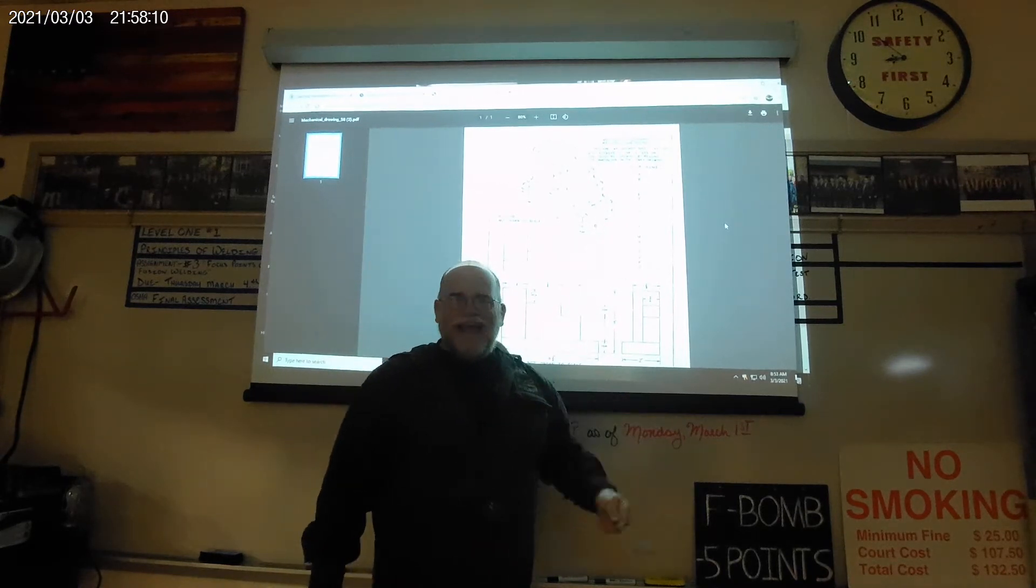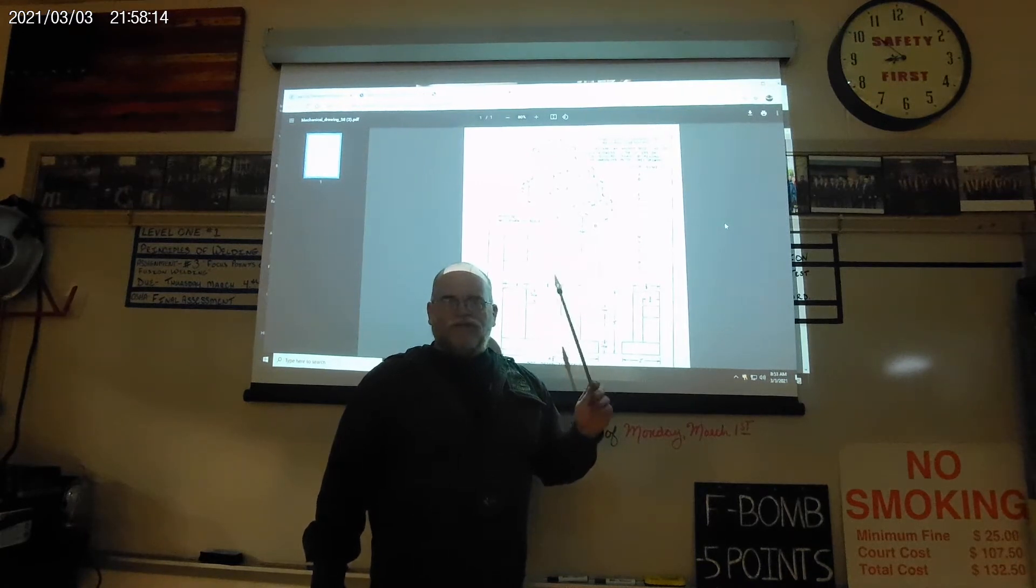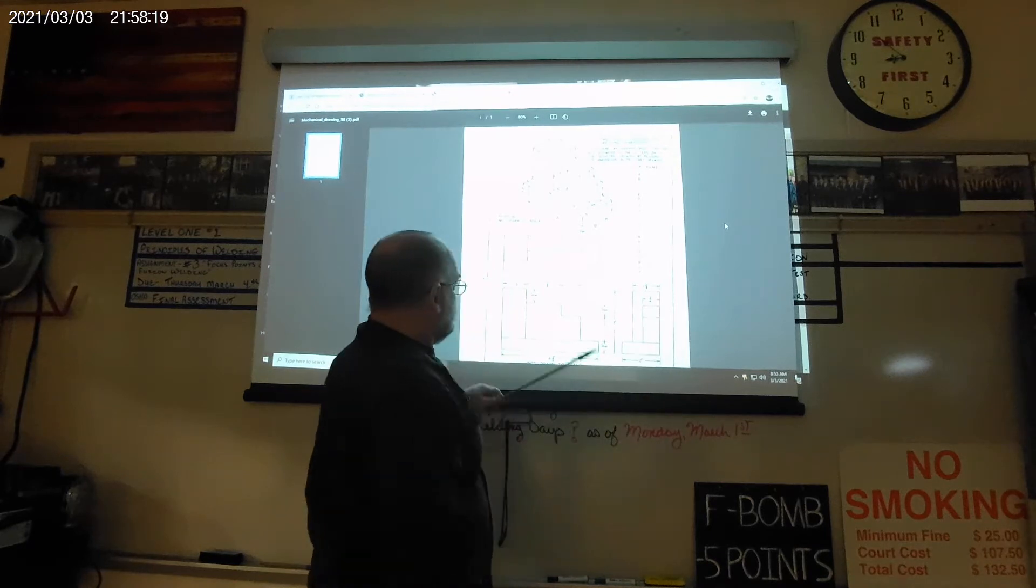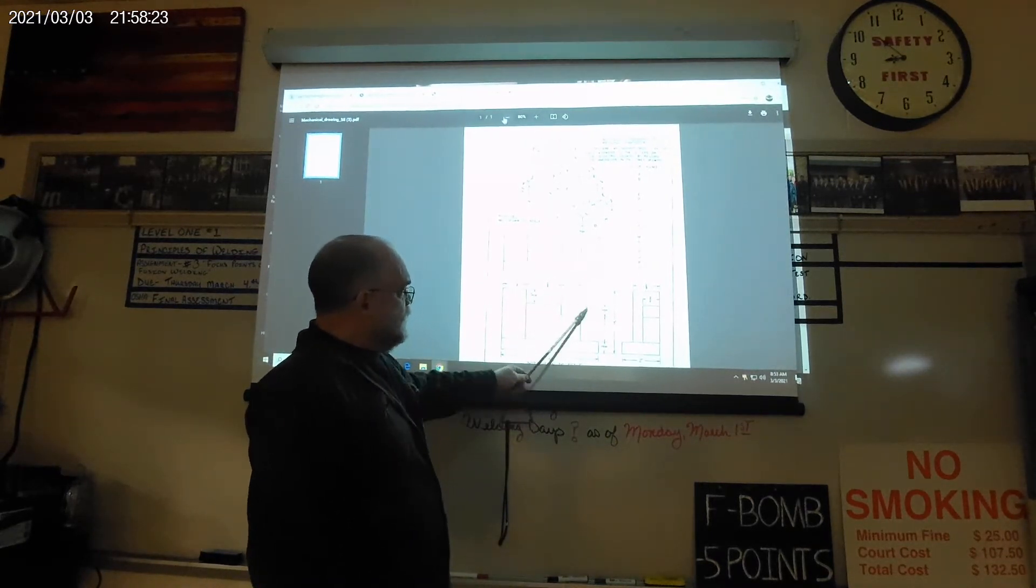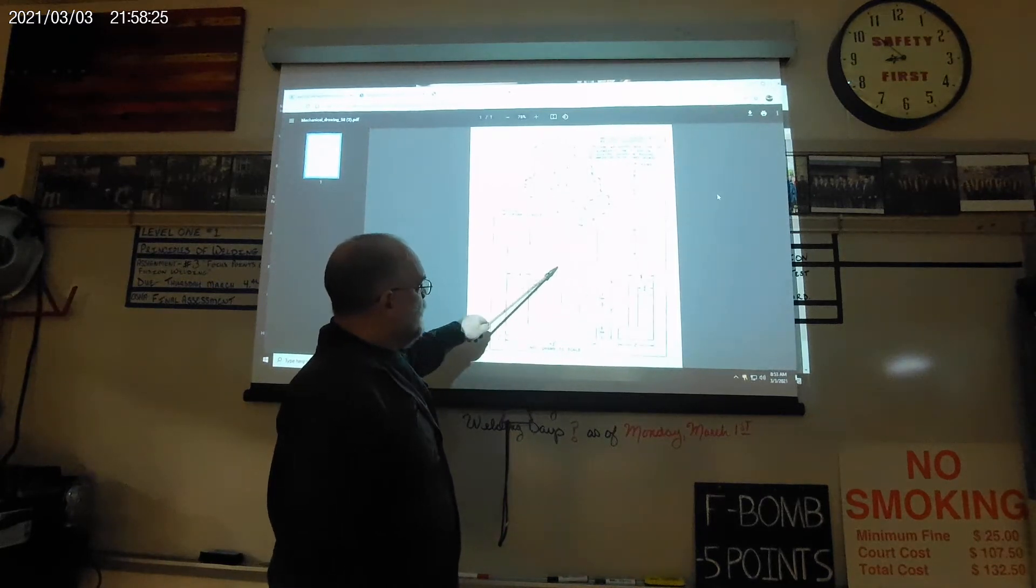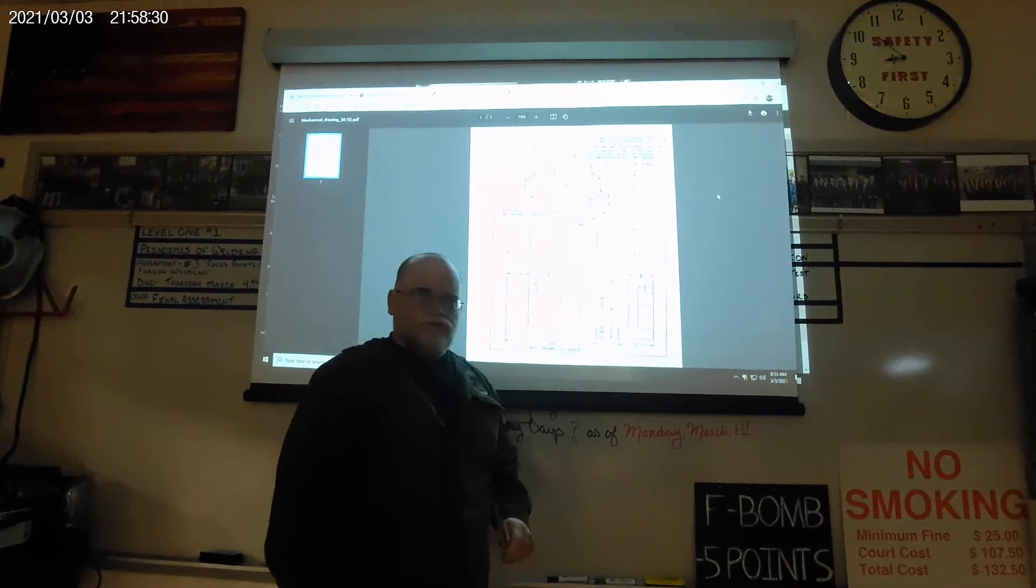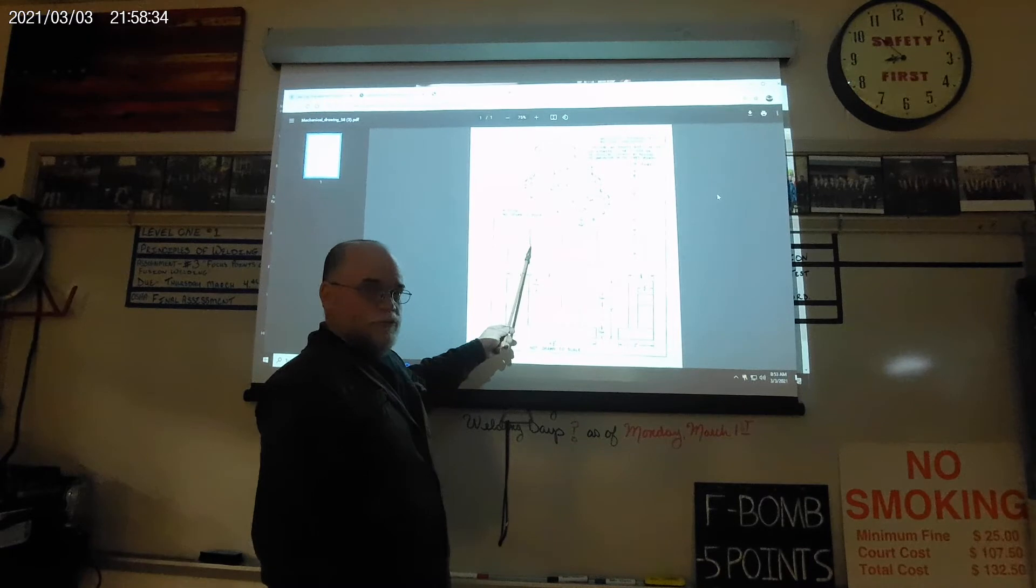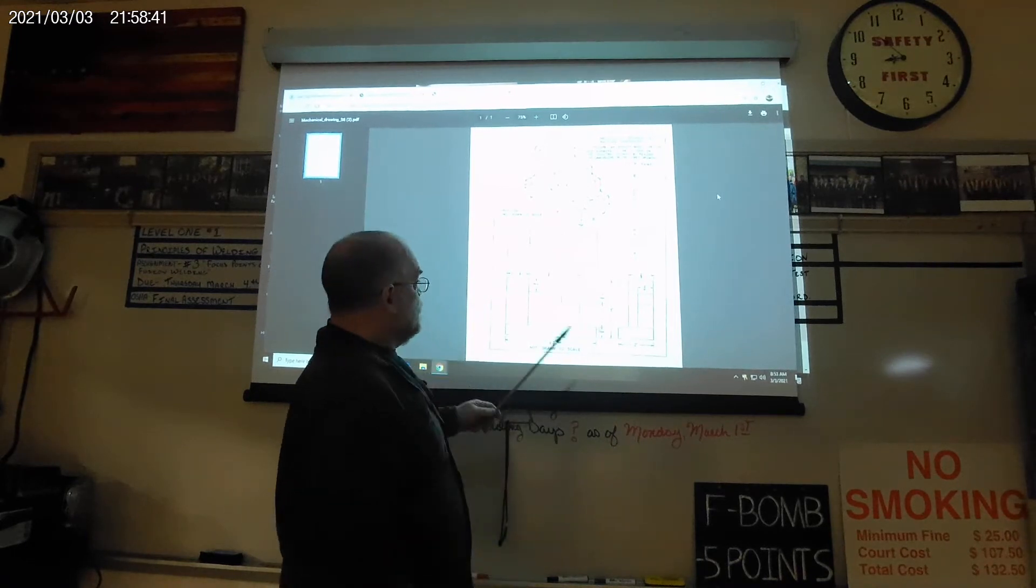Now the task at hand is to reference the known established and posted dimensions on one of the other three views. So naturally, and you'll see this is common, this view here is the front view. You should label it front right across here so you don't lose your reference. This is the top view and this is the right side view.